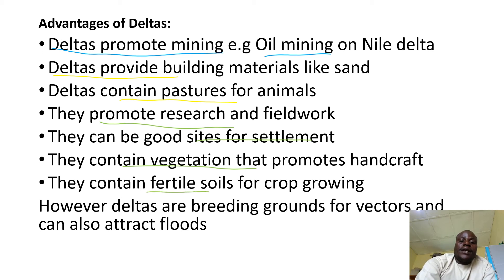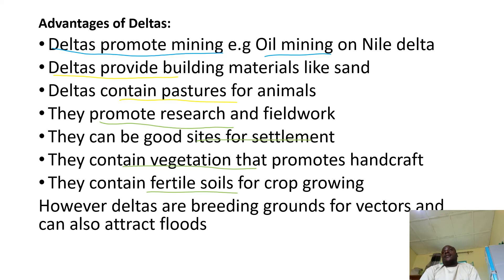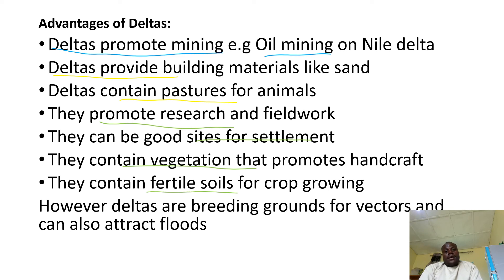Deltas contain fertile soils for crop growing. However, negatively, deltas might be breeding sites or grounds for vectors such as mosquitoes, and these mosquitoes may spread diseases like malaria. Also, deltas can attract floods because they are low-lying flood-prone areas.